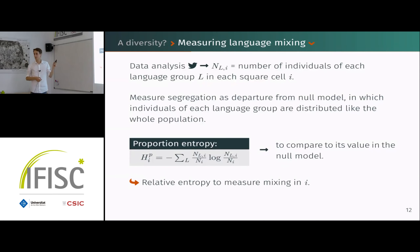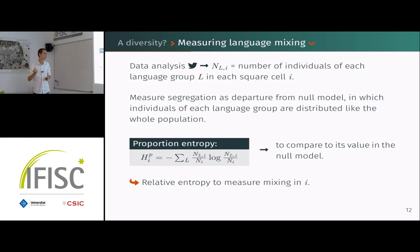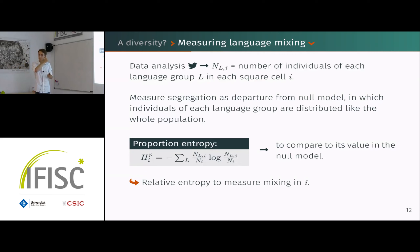From the Twitter data analysis, the basic measurement we get is the number n_{l,i}, which is just the number of individuals belonging to language group l — monolingual in one language, bilingual, etc. — in each of our square grid cells i, defined by a uniform grid over the regions of interest.